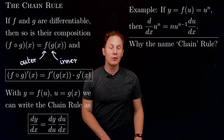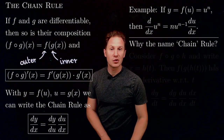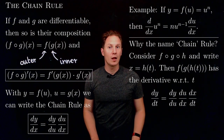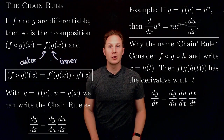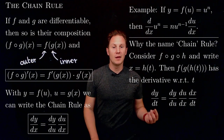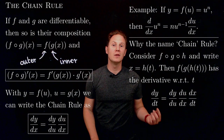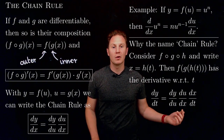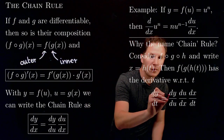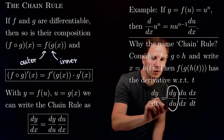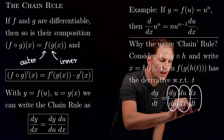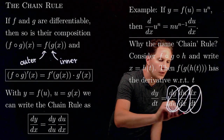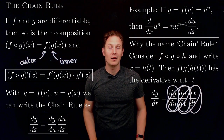In case you are wondering why it's called the chain rule, let me demonstrate it using the composition of three functions. We consider f of g of h of t, where x is now a dependent variable of a function of the independent variable t. The derivative dy over dt can be written using the chain rule as the product of three derivatives: dy over du times du over dx times dx over dt. Connecting these like links in a chain by circling the common expressions makes clear why it's called the chain rule.